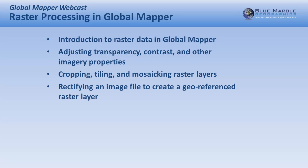We want to talk about more advanced processing — specifically rectification: taking a standard image file, a picture if you like, and using ground control points to give it geographic intelligence, creating a geo-referenced raster layer. That can then be exported in any of our supported formats and used in any other geospatial application.